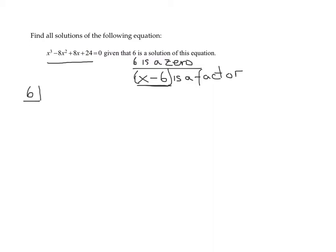So, let me write those. 1, negative 8, 8, and 24. Leave some room. And how do we do synthetic division? Bring down the 1, then you do 1 times 6, and you write the answer over here. 1 times 6 is 6.